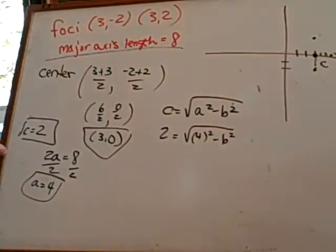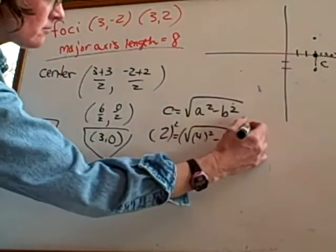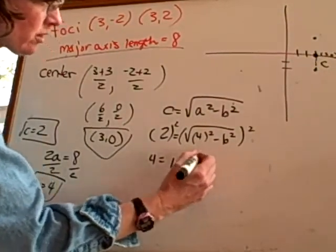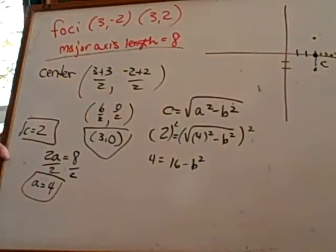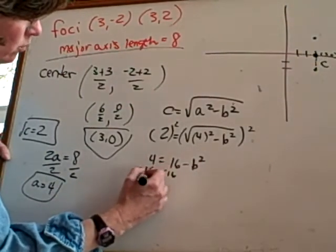So how would I do it from here? How would you get rid of that square root sign? Square both sides? Square both sides. So I'm going to put 4 equals 16 minus B squared. Would you agree with that?